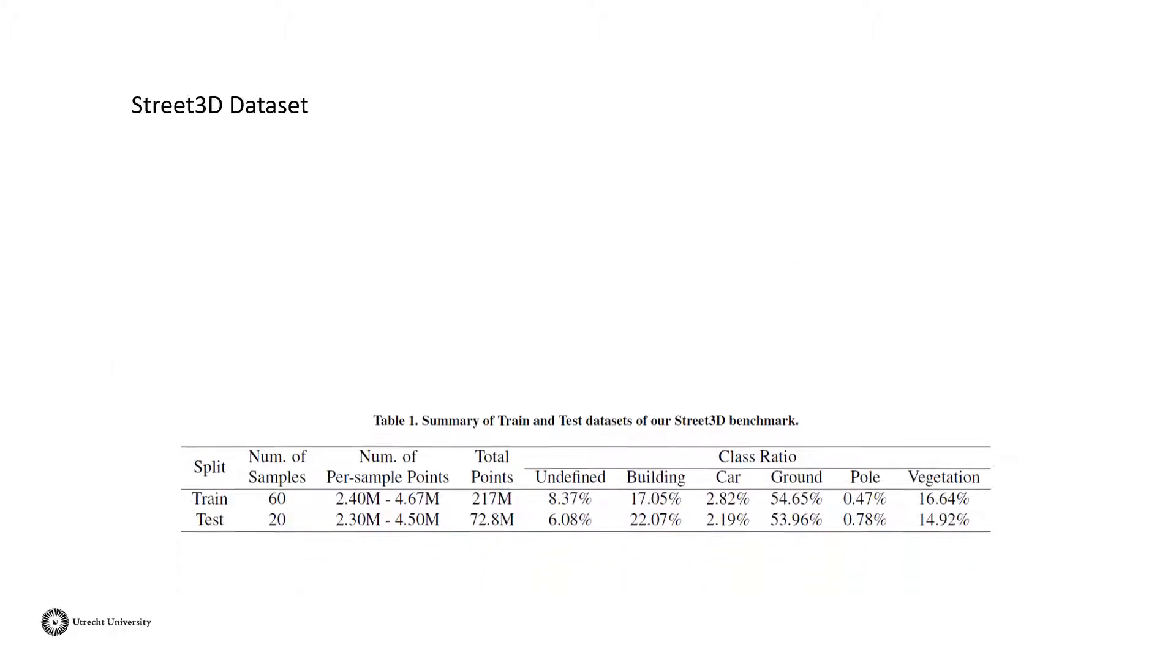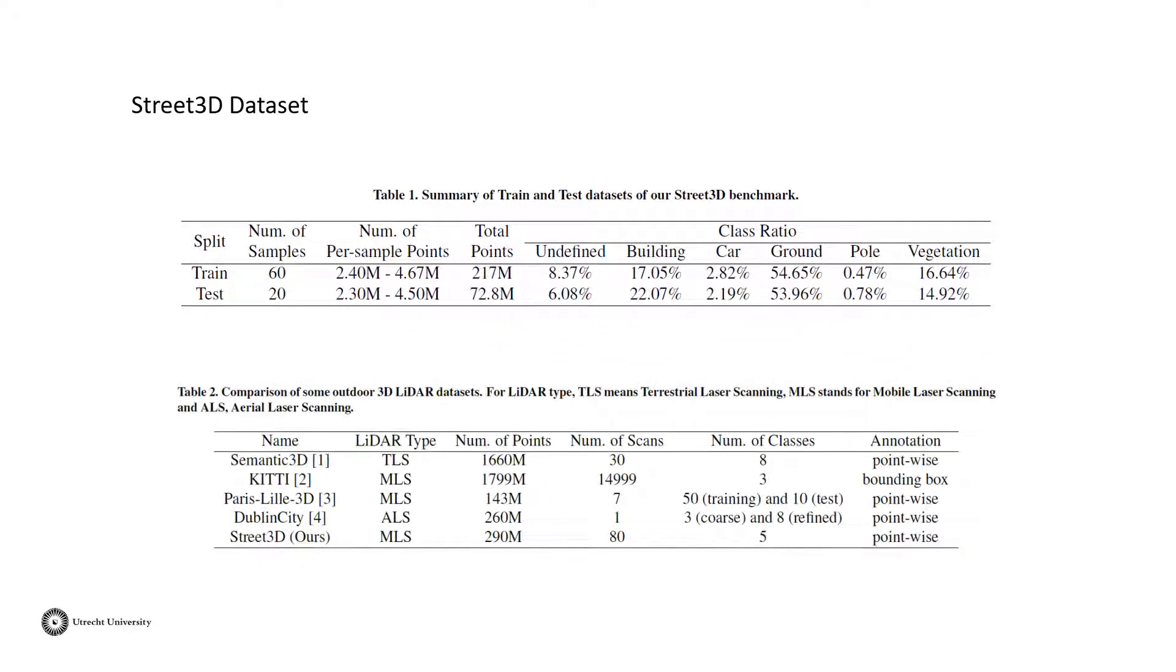We also compare the Street3D dataset with other well-annotated outdoor 3D point cloud datasets. As shown in Table 2, the Street3D dataset provides less dense but more scenes for outdoor 3D semantic segmentation tasks. The size of each scene makes a trade-off between precision and productivity.